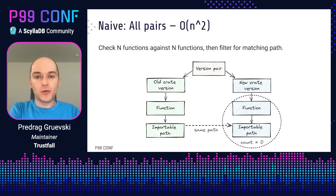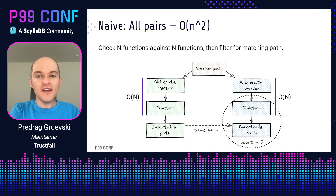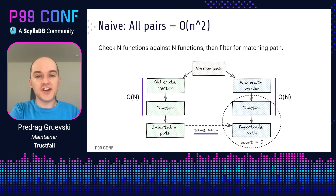A naive execution of this query would be O(N²). It would consider all pairs of functions between the old version and the new version of the code. We have N functions on the left and N functions on the right, and an O(1) check to see if their paths are a match. This is how the initial version of Cargo Semverchecks worked.